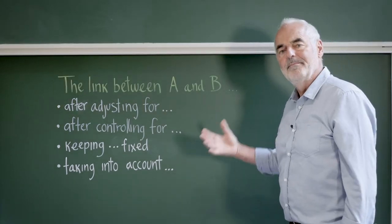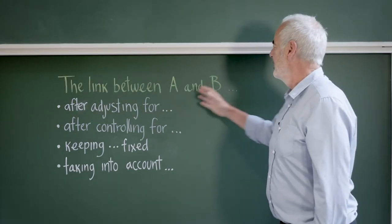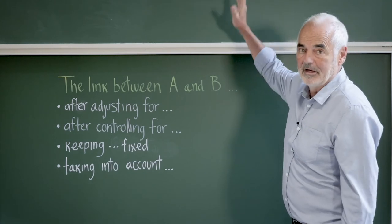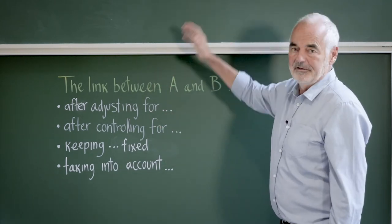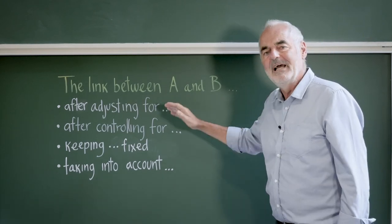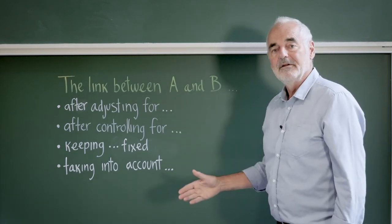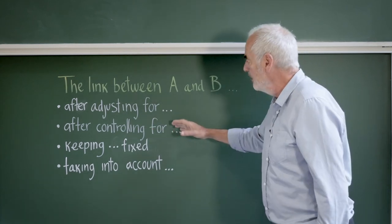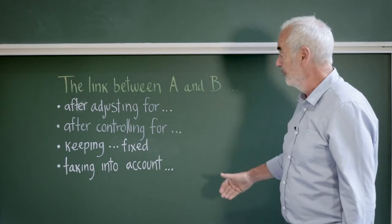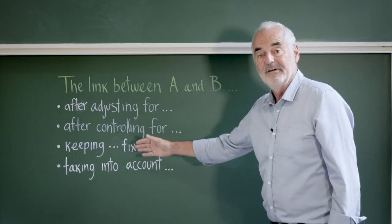Now let's look at some phrases you might use to communicate adjustment. Suppose you want to report an estimate of the link between A and B, say exercise and heart disease, after adjusting for age, smoking, diet and so on. Now that's fairly technical language and for less sophisticated audiences you might want to say after controlling for a list of factors or keeping this list of factors fixed.